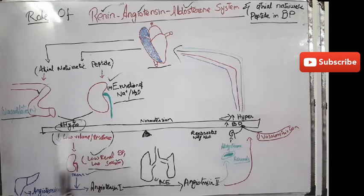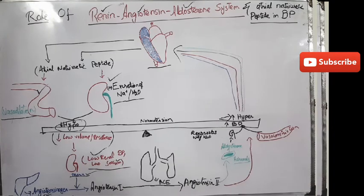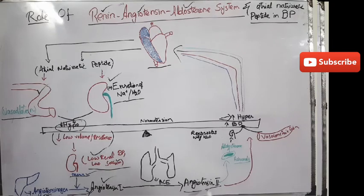Now what happens? When this renin is released, it acts on angiotensinogen that is produced from the liver, and angiotensin I is produced. This angiotensin I is converted into angiotensin II.